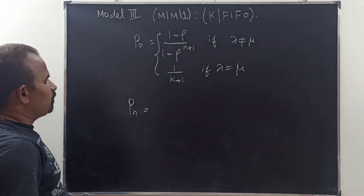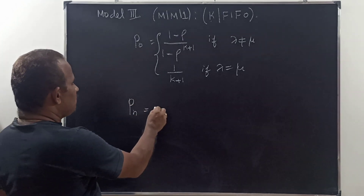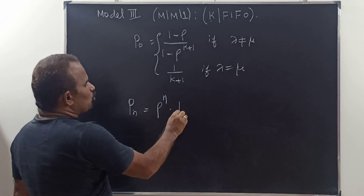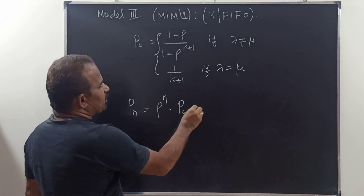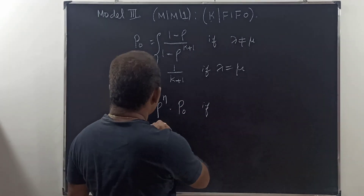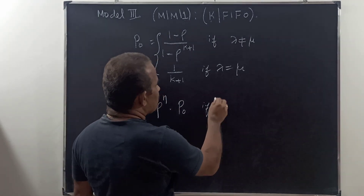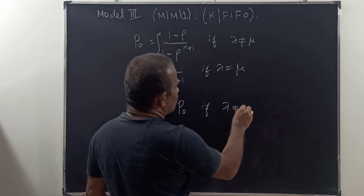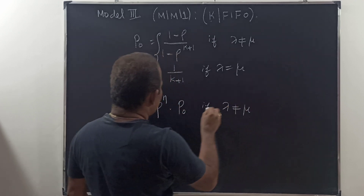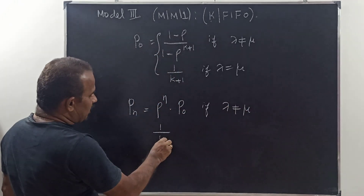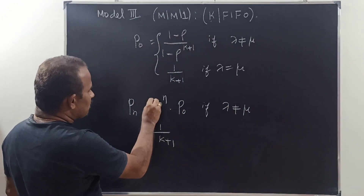Similarly, Pn is equal to rho power n, times P0, if lambda is not equal to mu. And Pn is equal to 1/(K+1) if lambda is equal to mu.